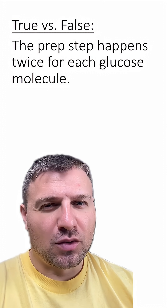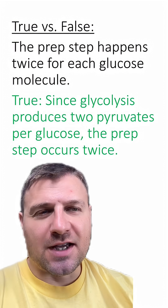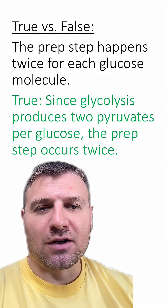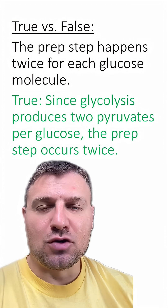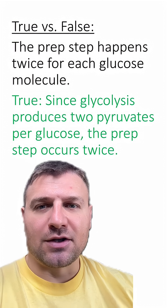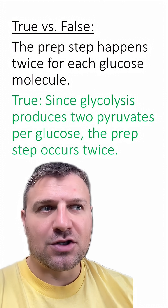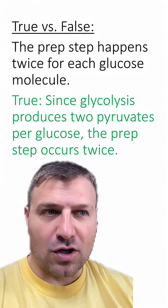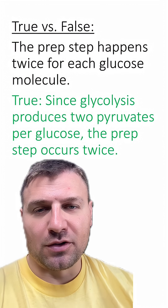The Prep Step happens twice for each glucose molecule. Is this true or false? This is true. Since glycolysis breaks down glucose into two pyruvates, each pyruvate has to go through this reaction, so this occurs twice per glucose.